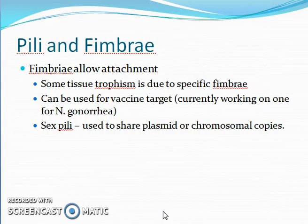Some tissue tropism is due to the specific type of fimbriae that are present. Cells are able to bind more specifically to respiratory tissue, urinary tract, or cuboidal cells — meaning they are more attracted to a specific kind of tissue.